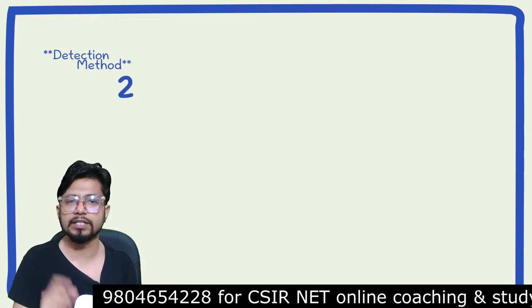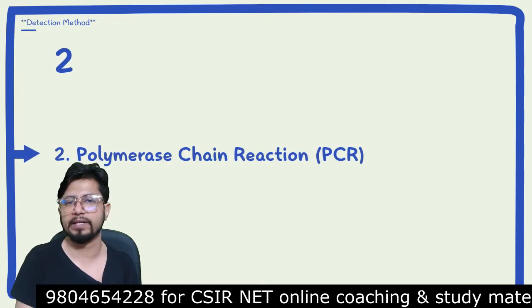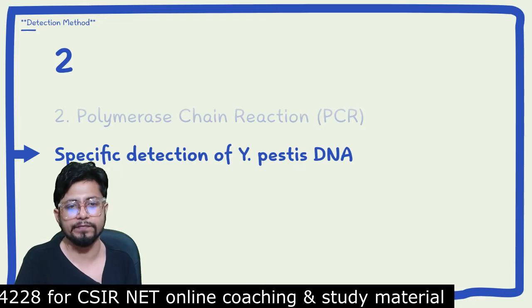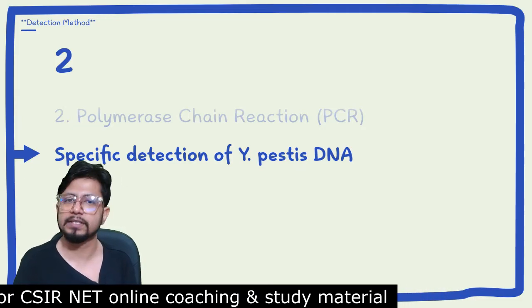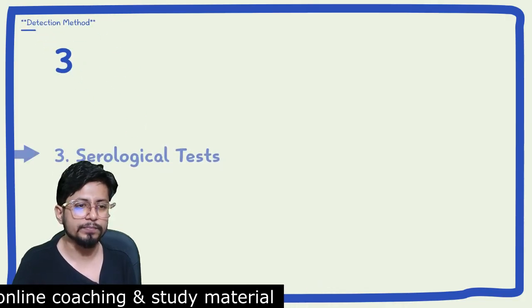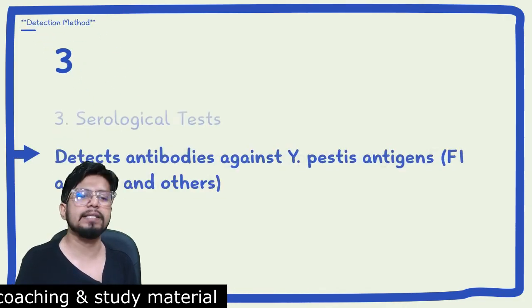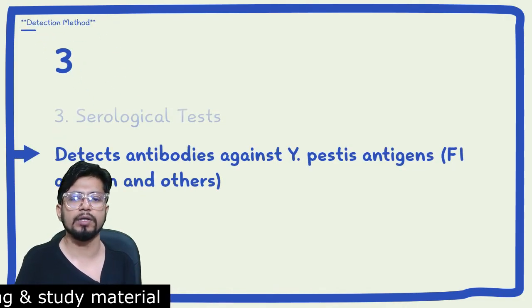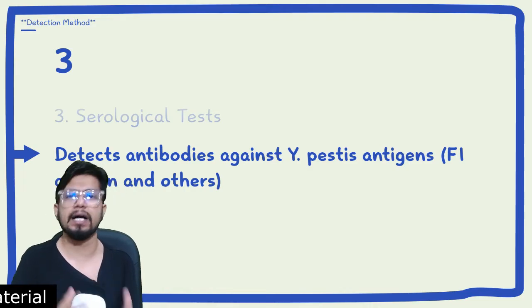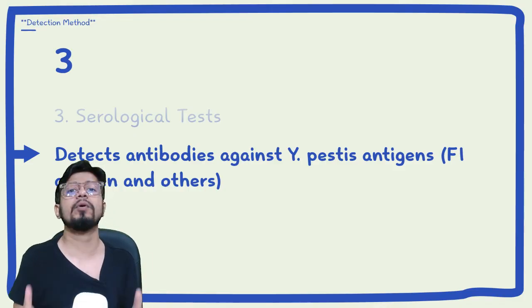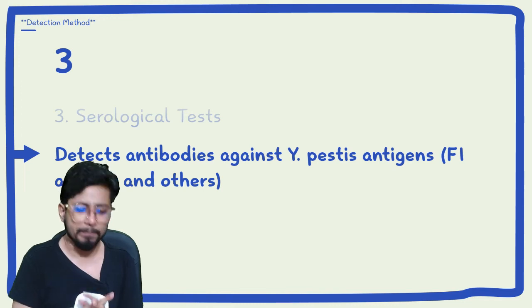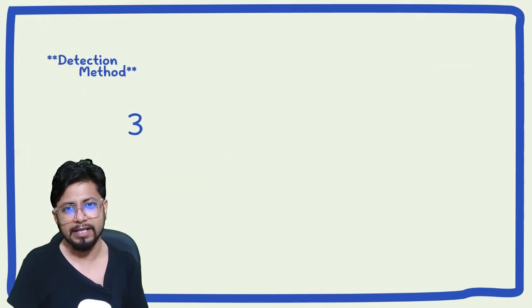The second detection method is polymerase chain reaction (PCR), a molecular technique that detects the specific DNA components of Yersinia pestis. The third method is serological testing, which detects antibodies against Yersinia pestis antigens — such as the F1 antigen — that are produced by the body and can be detected using serological assays.